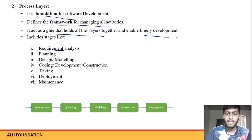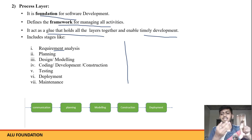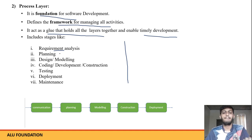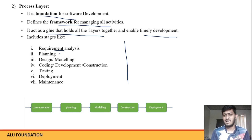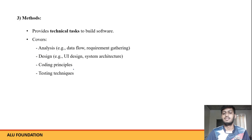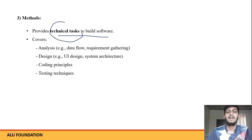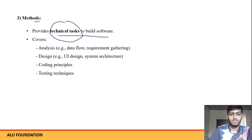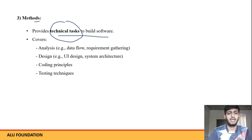So this is the process in the process layer. This is the main process, though a company can add or remove steps as per their choice. Next, methods: it provides the technical tasks needed to build software. It covers which methods, principles, and techniques to use for planning, analysis, design, and testing.